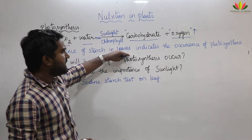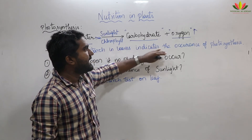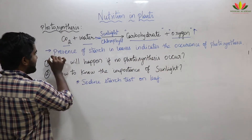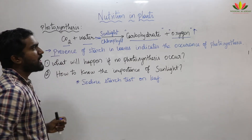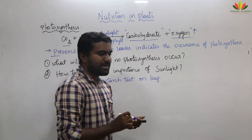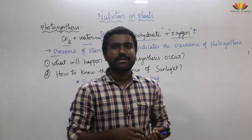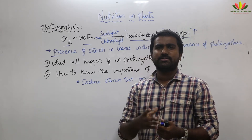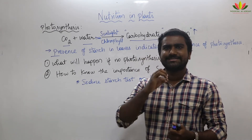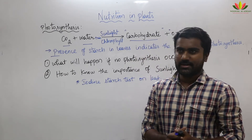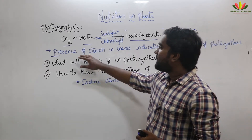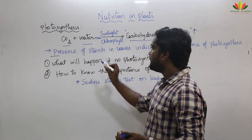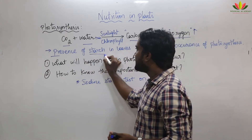The presence of starch in leaves will indicate the occurrence of photosynthesis. How do we believe that photosynthesis is happening in plants? First of all, we have to know what starch is.